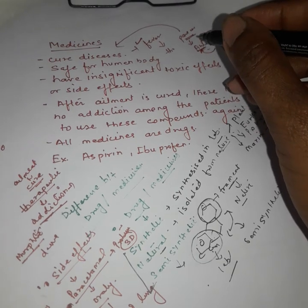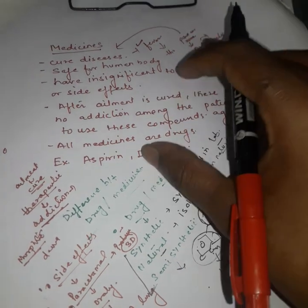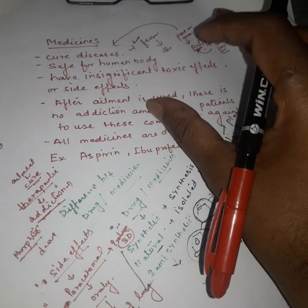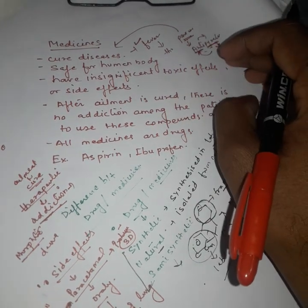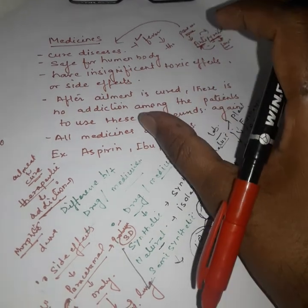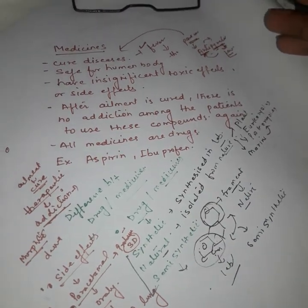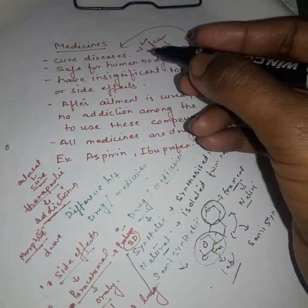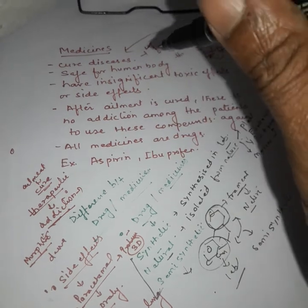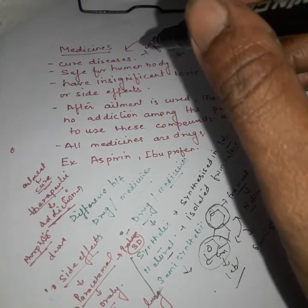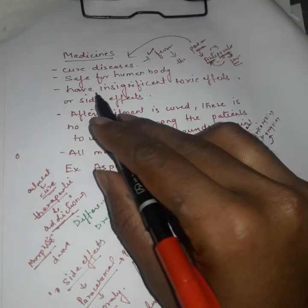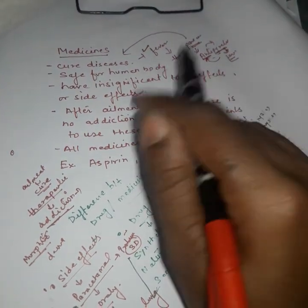Drugs may or may not cure a disease, whereas medicines have a confirmed therapeutic effect. Medicines are safe for the human body, but drugs may or may not be safe — there is no confirmation that a drug is safe. In the case of medicines, several literature reports and clinical trials confirm their safety.